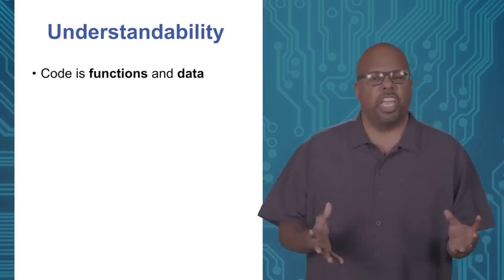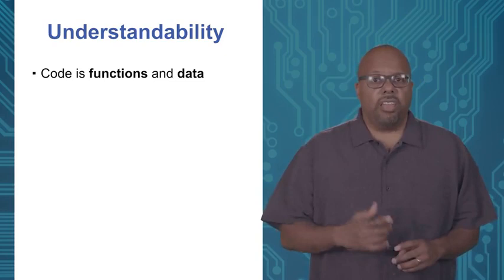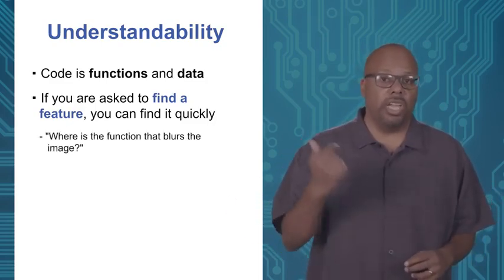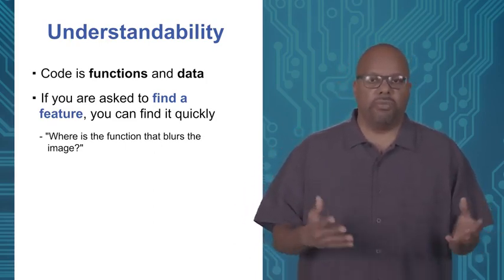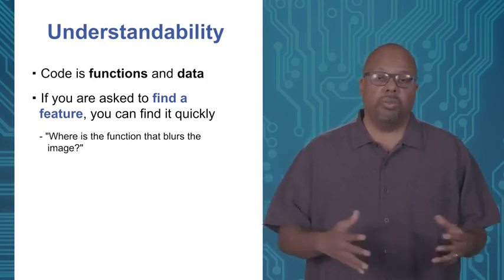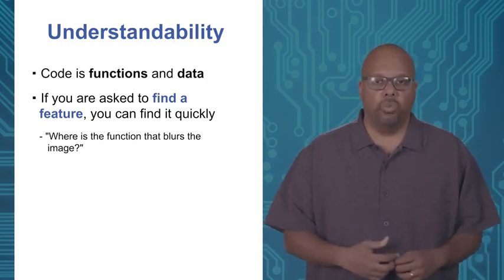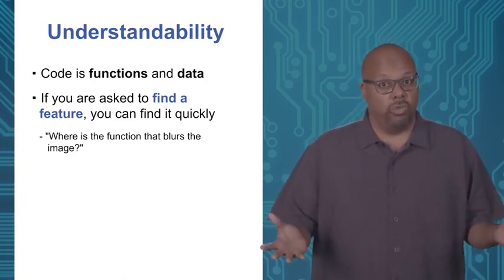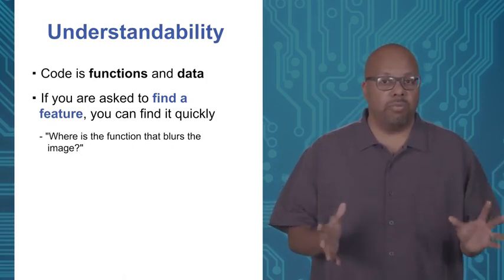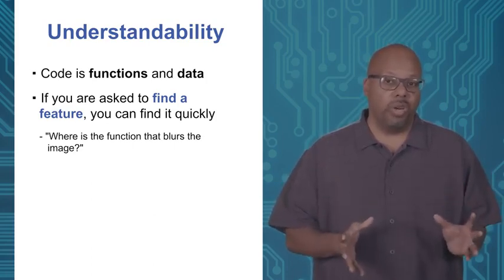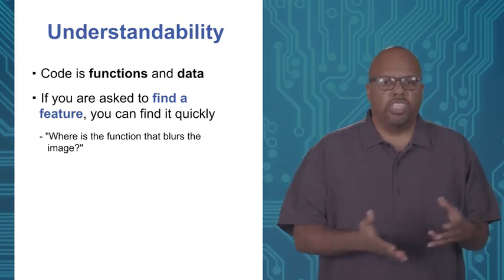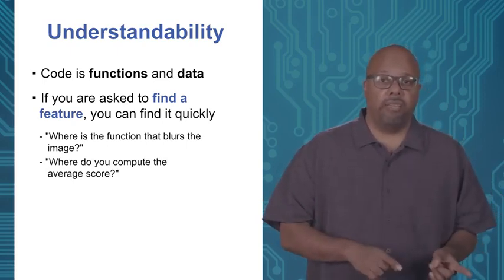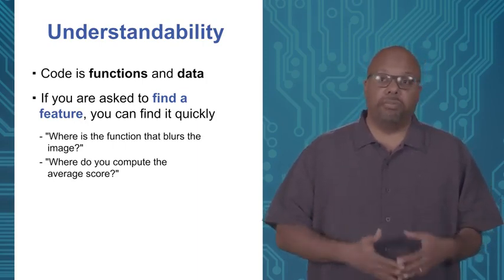When I say understandability, I mean that if you're asked to find a feature, you can find it quickly. For example, where in your code is the function that blurs the image? You might be asking that because you found a bug, or in a code review meeting, or your boss asks you. You will look like an idiot if you can't answer that — it's your code, you wrote it. If you write complicated code and walk away for a month, you come back and will have lost track of what the heck that code did. So you really want to construct it in a way that makes it easy to locate these features.